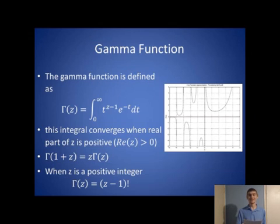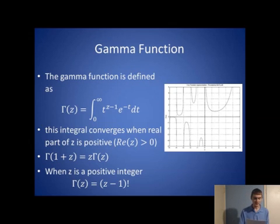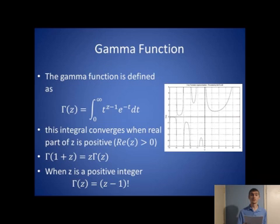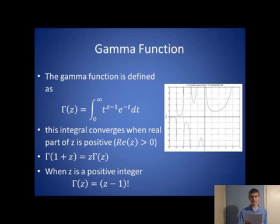The first necessary function for fractional calculus is the gamma function. It plays a big role in fractional calculus, as it appears in the definitions of fractional derivatives and fractional integrals. The gamma function was invented by Euler to extend the factorial to complex and real number arguments. It is defined as the integral from 0 to infinity of t to the z minus 1 times e to the negative t dt. This integral converges when the real part of z is positive. A useful property is that gamma of 1 plus z equals z times gamma of z, and when z is a positive integer, gamma of z equals z minus 1 factorial.